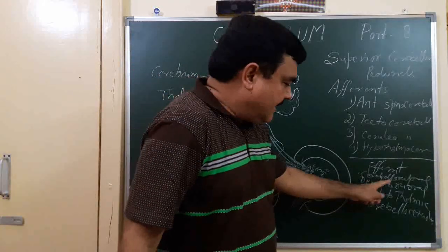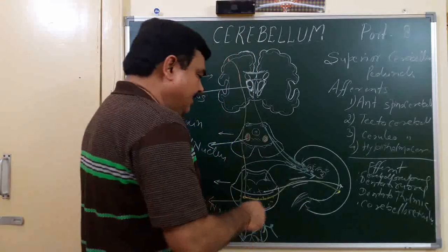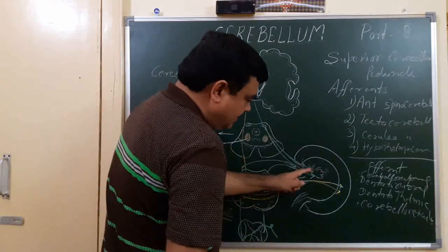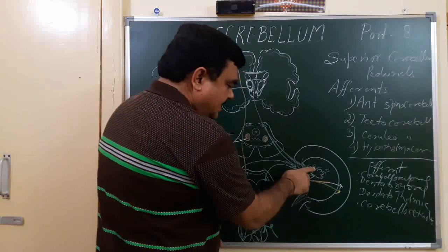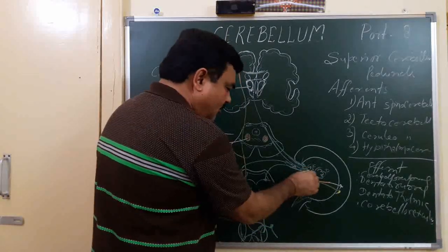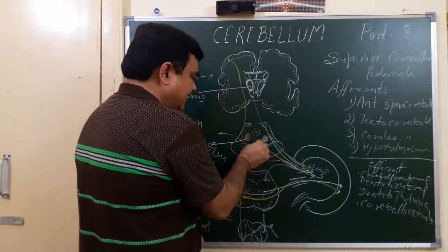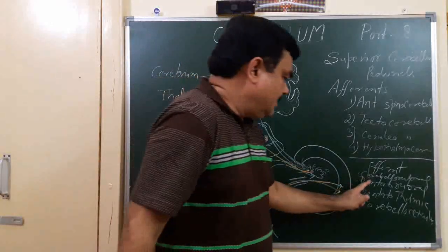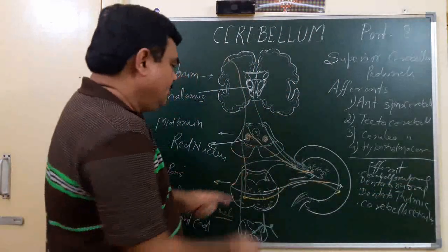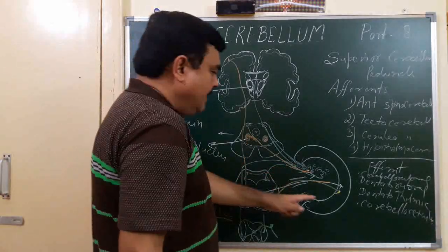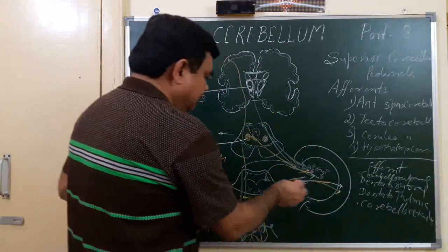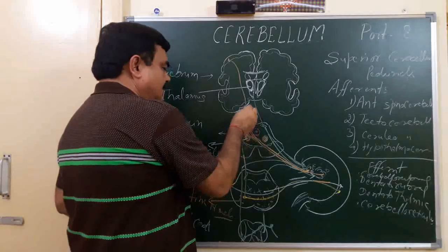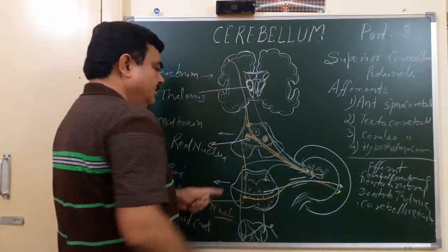Now the efferents. The efferents include the cerebrorubral tract, going to the red nucleus. It arises from the dentate nucleus, emboliform, and globosus nuclei. The cerebrorubral fibers go to the red nucleus, and the dentatorubral fibers arise from the dentate nucleus, crossing to the opposite side.